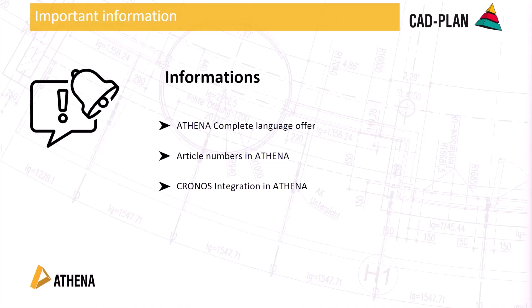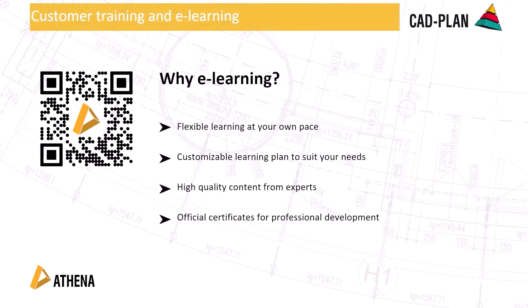Stay tuned for the next webinar and find out how you can take your project management to a new level. I would like to give you an overview of why you should look into our e-learning platform using the QR code. On the left side you come directly to the registration process and see the benefits again. You have access to the whole e-learning with Catplan products. You can learn at your own pace with customizable learning plans based on your personal needs. You have high-quality content from experts and at the end you can gain an official certification for professional development, which you can put in your CV and also share on social media.